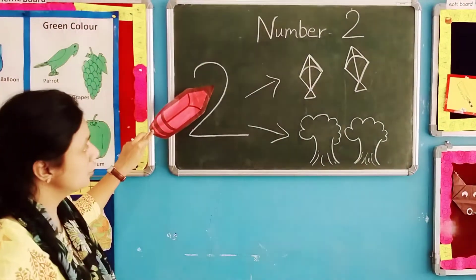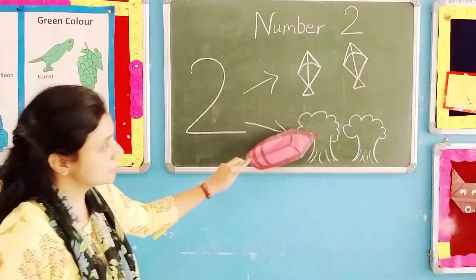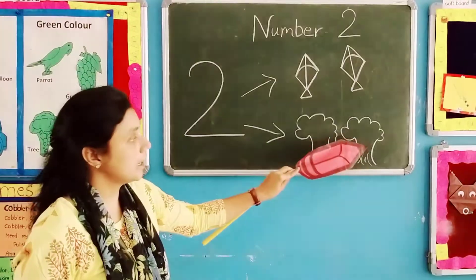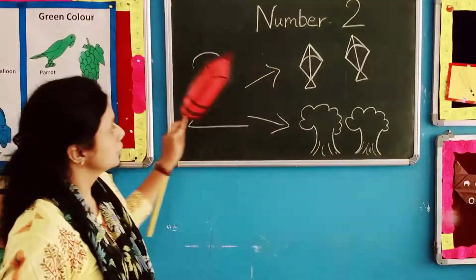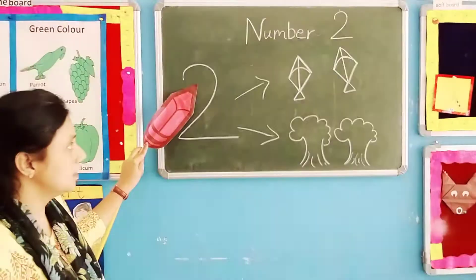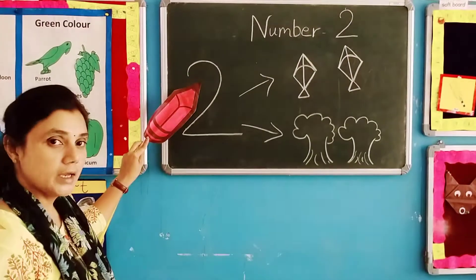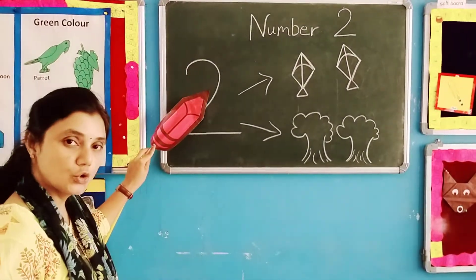Number 2 — 2 threes. 1 and 2. Which number is this? Number 2.